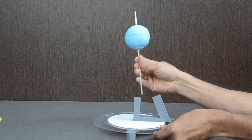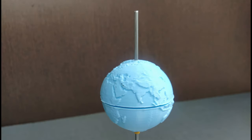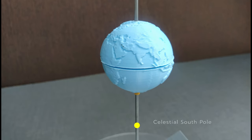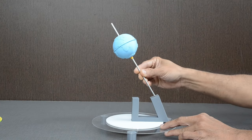We will mount the assembly on this platform. This is our North Pole. If we extend it further, tip of this axle can be considered as the celestial North Pole. Somewhere here will be celestial South Pole. Let us insert the axle in this hole.